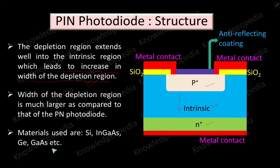The materials used for making PIN photodiodes are silicon, indium gallium arsenide, germanium, gallium arsenide, etc. These are basically direct band gap materials. The only difference in the structure compared to a PN photodiode is that we are adding an intrinsic region.